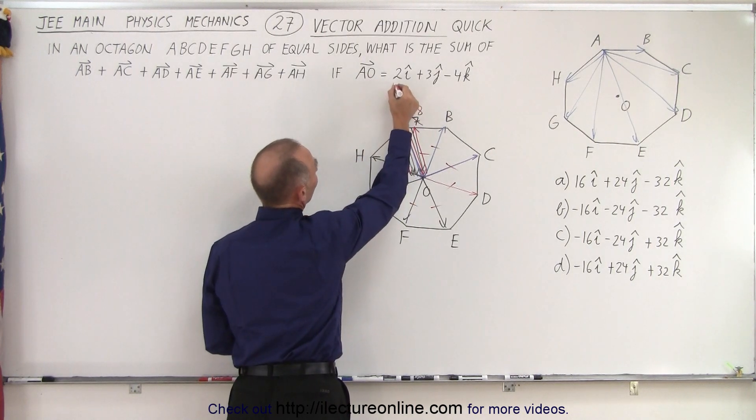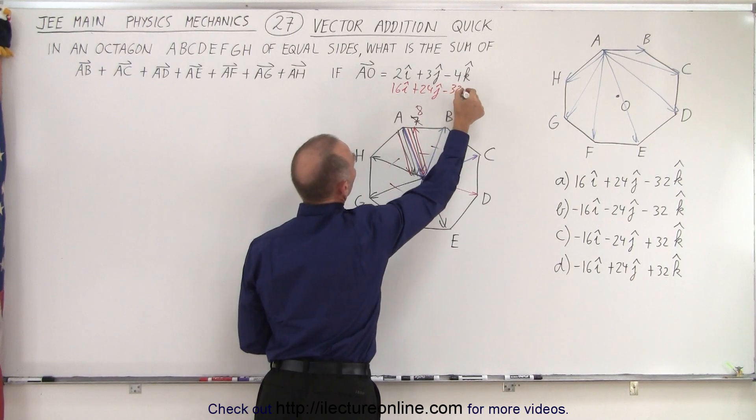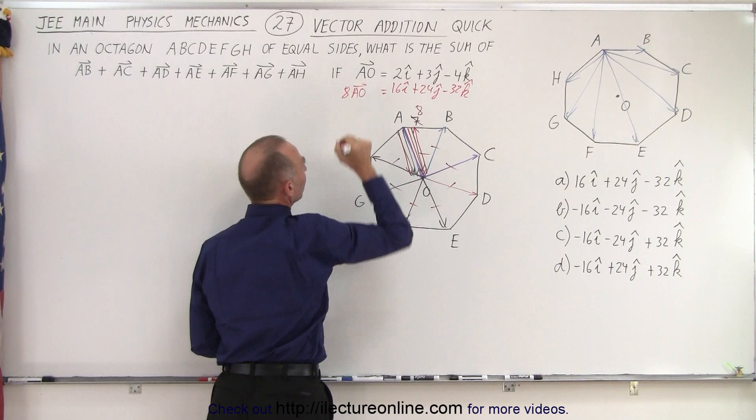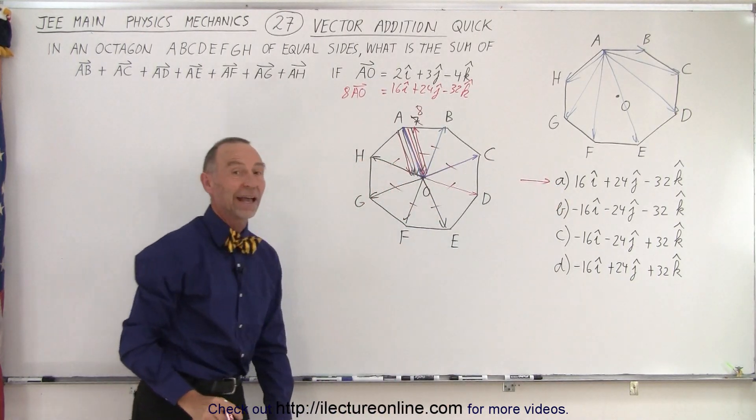Notice that gives us 16i plus 24j minus 32k, and that would be eight times the A to O vector. And notice the answer that gives us is answer A.